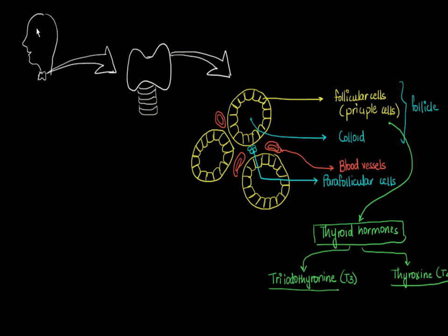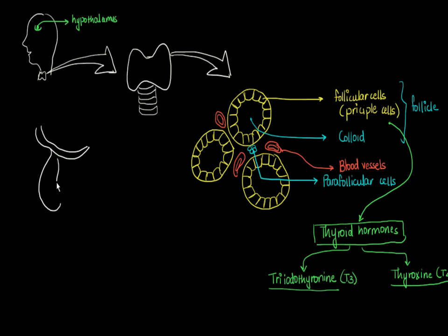Before we go into how thyroid hormones are produced, let's look at how they are controlled. The control center is the hypothalamus, which is the control center for the whole endocrine system of the body. From the hypothalamus hangs the pituitary gland — the anterior pituitary and the posterior pituitary.